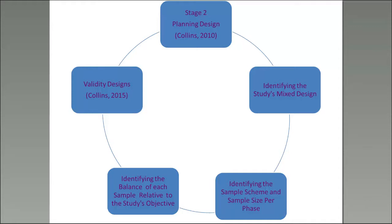In designing the different stages of the research process, the stage we're going to focus on today is Stage 2 — the planning and design stage. Here you identify the study's mixed design, identify the sampling scheme and sample size per phase or strand, and identify the balance of the sample relative to the study's objective — by objective I'm talking about generalization. Throughout this process you are incorporating a validity design, ascertaining that the results at each stage are valid and contribute to your understanding of the research question.